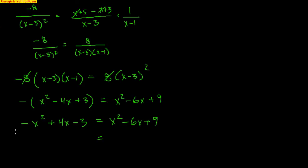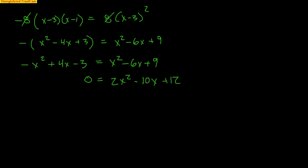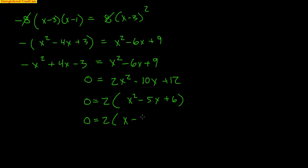Moving everything to the right side: 2x² - 10x + 12 = 0. Factoring out a 2 gives x² - 5x + 6 = 0, which factors as (x - 3)(x - 2) = 0. So x = 3 and x = 2 are the two potential x values for the points of tangency.